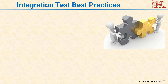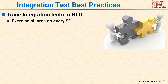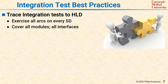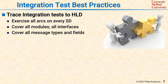Integration testing best practices revolve around concentrating on the interaction of components. Integration tests should be traced to the high-level design, including exercising all the arcs on every sequence diagram, covering every sequence diagram in the high-level design — all the modules, all the network interfaces, all the message types, all the data fields. The idea is, assuming unit testing has found everything unit testing is likely to find, how can you additionally stress the interactions among components to make sure the units each do what they want to do, but when you put them together, they actually still satisfy all the aspects of the high-level design.